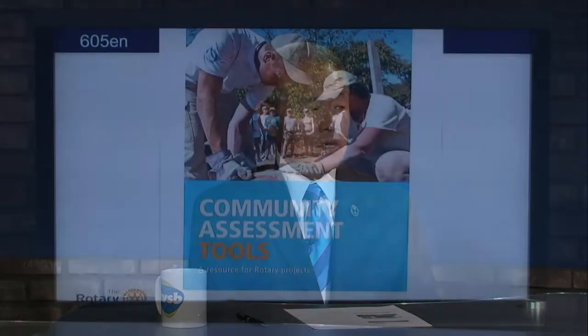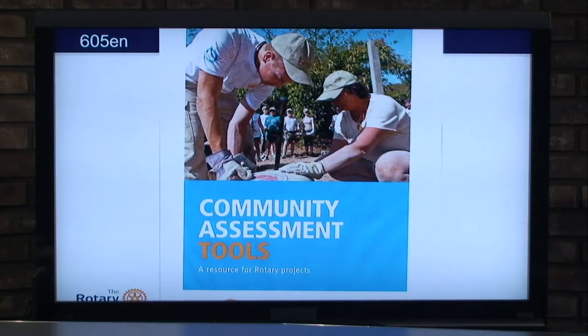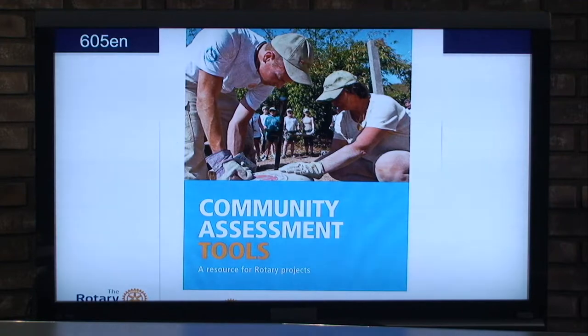The community assessment focuses on one of the six areas of focus. For example, if we're looking at water and sanitation, the community assessment will evaluate the need for that water — where it's going to come from, how it's going to be distributed, whether people are going to use it, if they have secondary sources, and if the water is something they actually want.